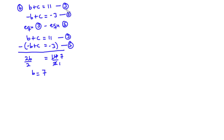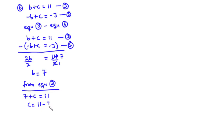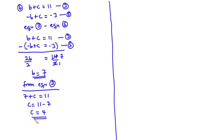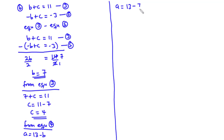From equation 3: 7 plus C equals 11, so C equals 4. From equation 4: A equals 13 minus 7, so A equals 6. We now have A equals 6, B equals 7, and C equals 4.